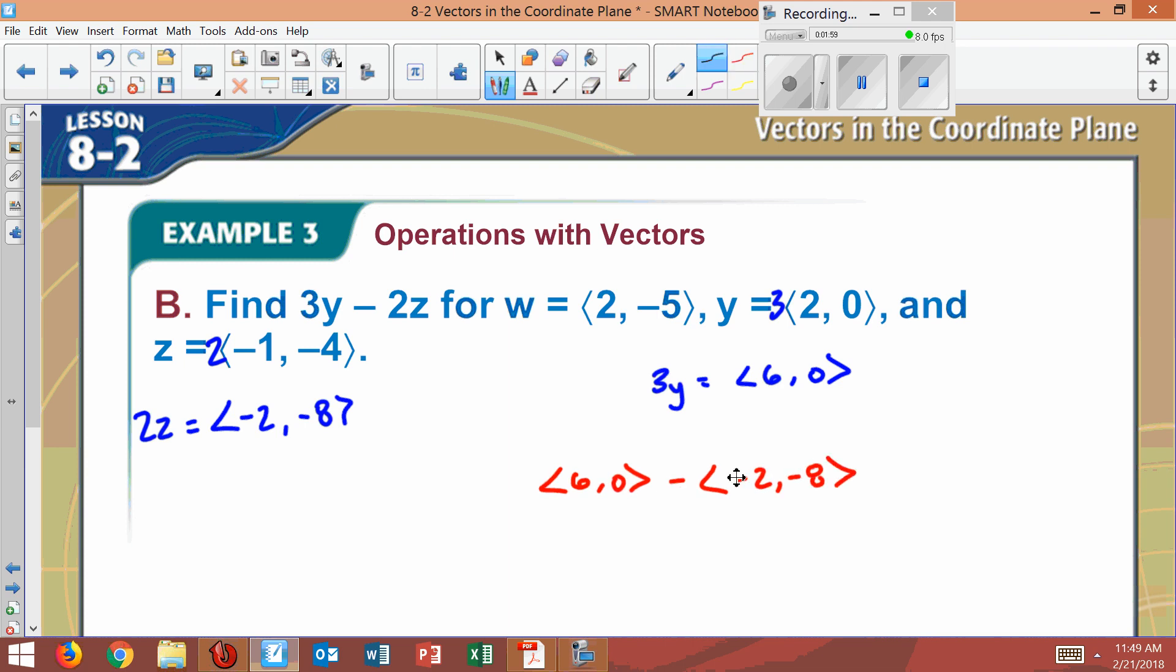I'm going to distribute this through. It'll make it easier. If I distribute that negative through, these all would come positive, which will leave us with 6 plus 2 is 8, and then 0 plus 8 is also 8. This would be our value here.